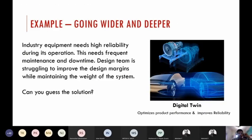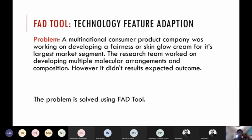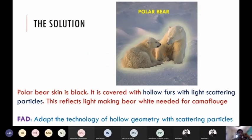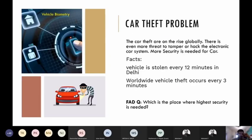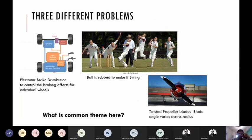We talked about all the psychological inertias, and an interesting tool called FAT — the Feature Adoption Tool. We talked about how we can adopt ideas from other industries, like biometrics from government reserves and the FBI. We are not inventing the technology ourselves but integrating it into our products. In fact, everything is available — we use building blocks already available and create a completely new system.